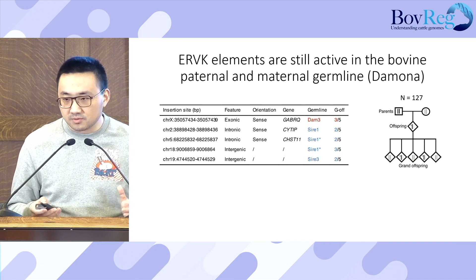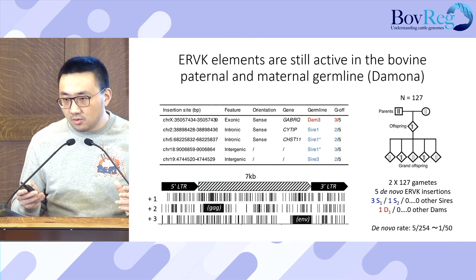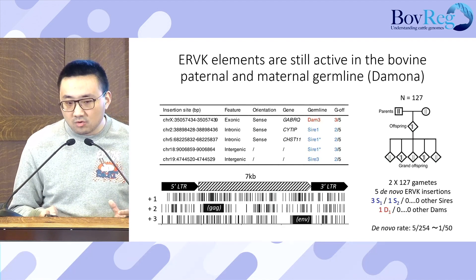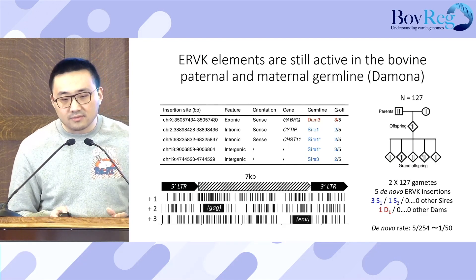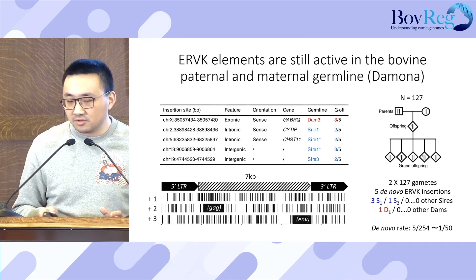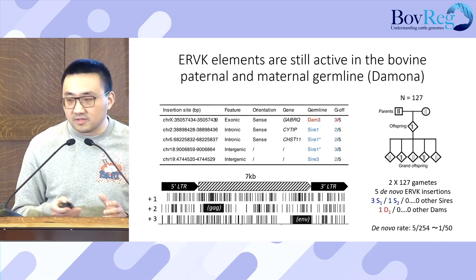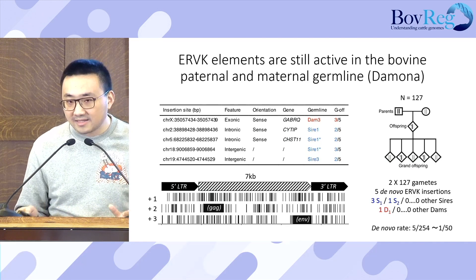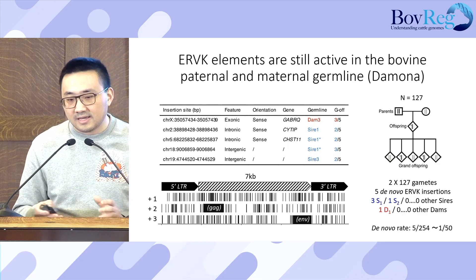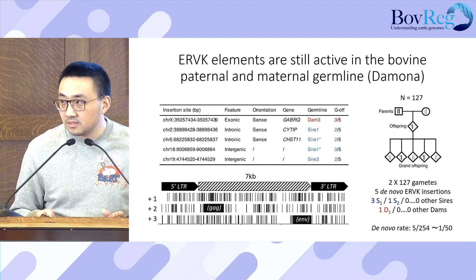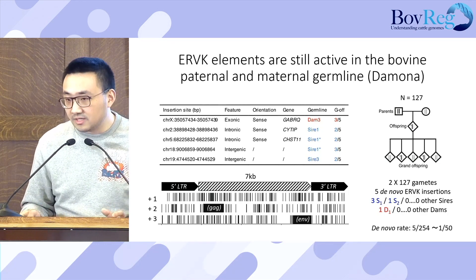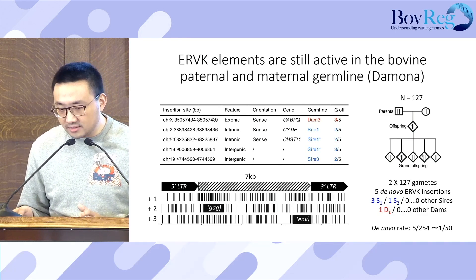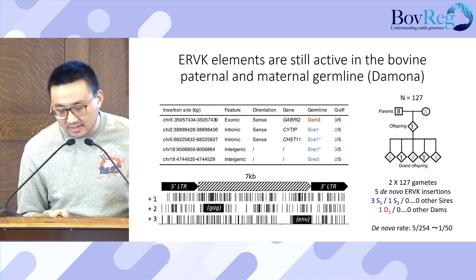In total, we identified five de novo ERV insertions of the same type as the one in APOB. They are all defective. Four of the five events occurred in the germline of the father, and one occurred in the germline of the mother. Three of the four paternal events occurred from the same sire, and two of the events even occurred in the same sperm. From this, we conclude that ERVK is indeed still active in bovine germline, both in male and female. We can roughly estimate the mobilization rate at approximately 1 in 50, including the outlier, and this dataset suggests major individual differences in mobilization rate.